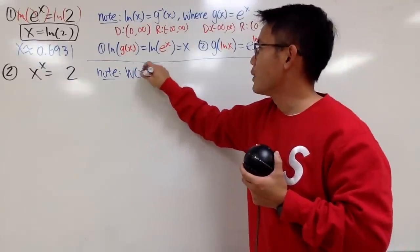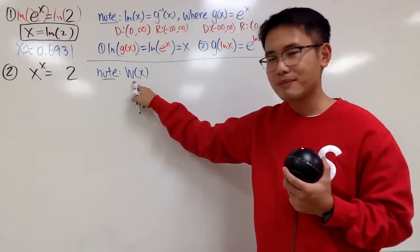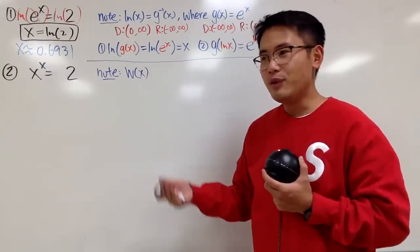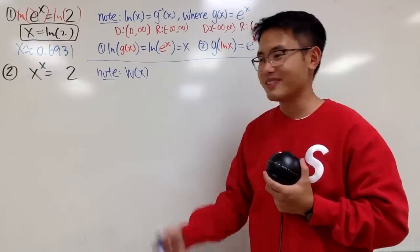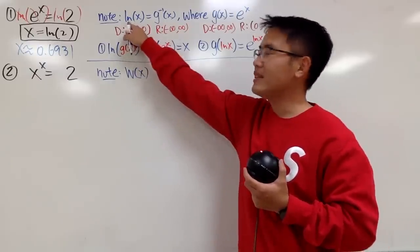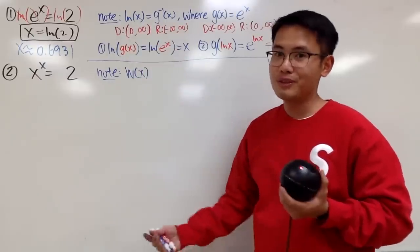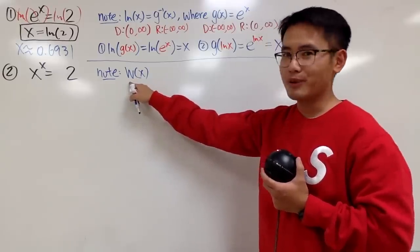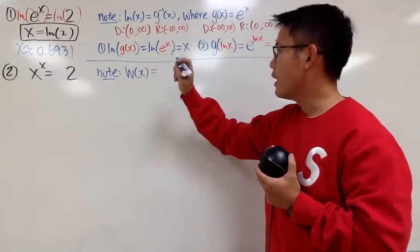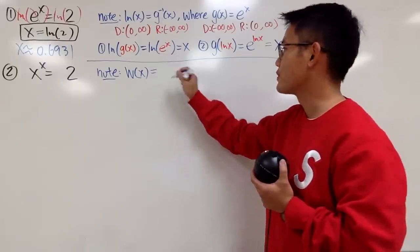Anyway, here we go. The notation that we're going to use is w of x. Nothing too fancy. If you want, you can put on lw for Lambert w function. And earlier, if you didn't like ln, you can just put on l. So, same idea. But this is the classic notation, w of x.